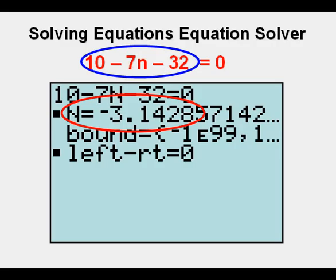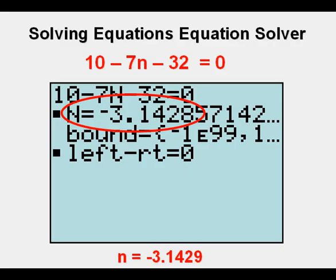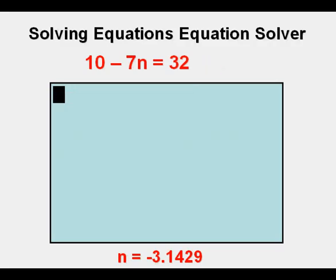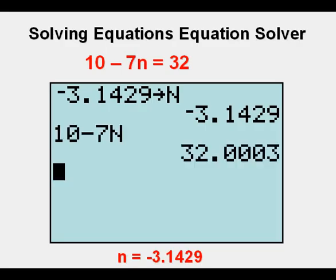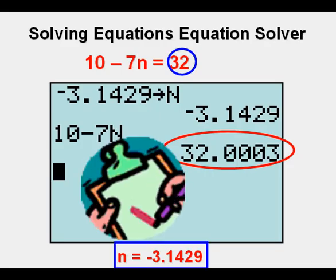We get a negative irrational number as our answer — it looks like it's close to pi. Let's write it down to four significant figures to use it to check. We re-enter the original equation, get to the home screen by pressing second then quit, and store negative 3.1429 to n. We enter the left side of the equation and press enter. Since 32 equals 32, we have verified that n equals negative 3.1429. Check.